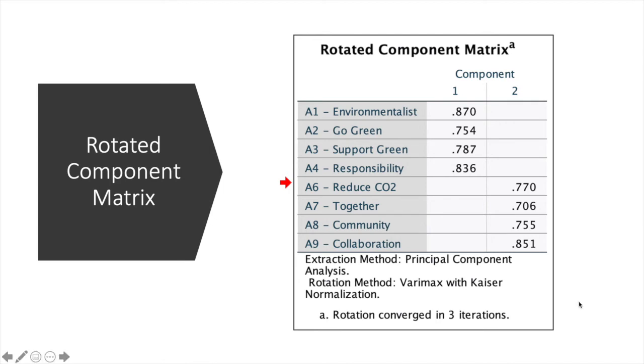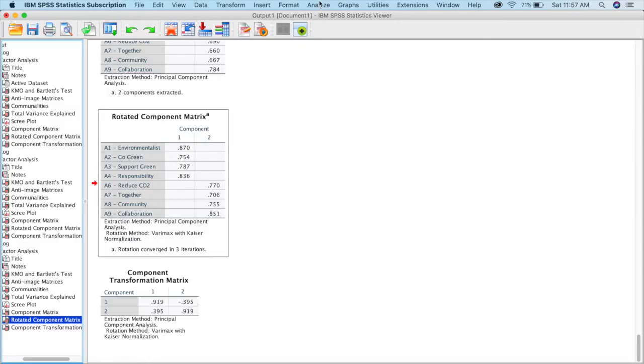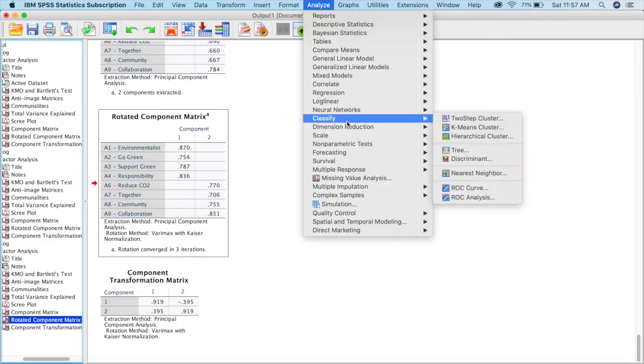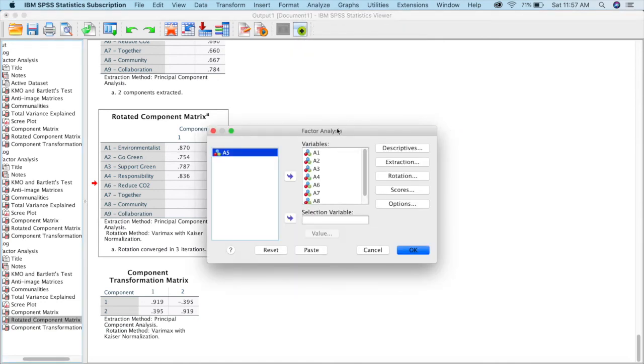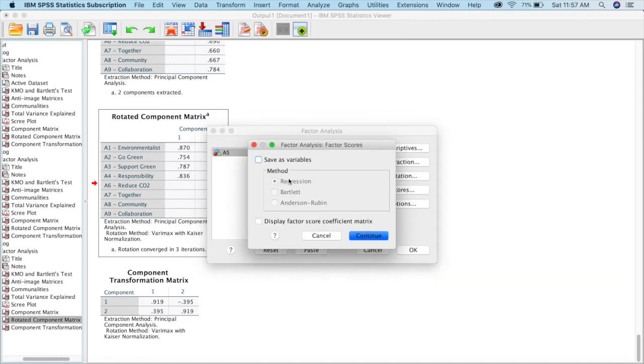Moving forward, what we can do is we can save these scores—we can save the factors. I will show you how you can do that in SPSS. Go to Analyze, Dimension Reduction, Factor, Factor Analysis, you go to Scores, Save As Variable.